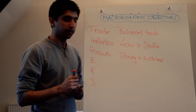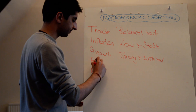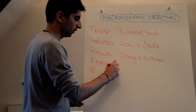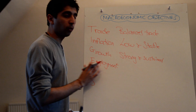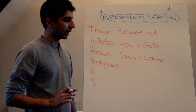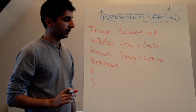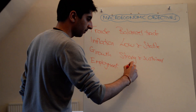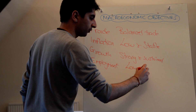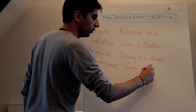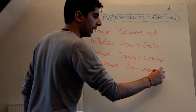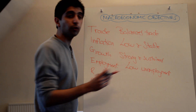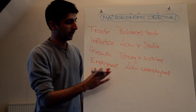E is for employment — a very important macroeconomic indicator. The objective here is very simply low unemployment. As low as possible. As close to full employment as possible.